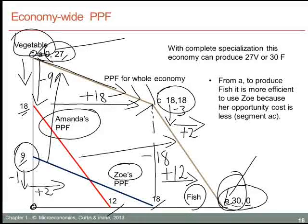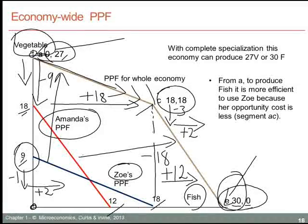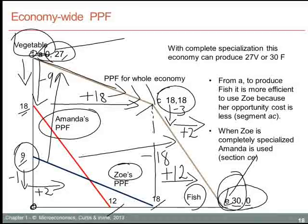If we are trying to be efficient in the allocation of labor and start from any point on the economy-wide production possibility frontier, we should use the individual who is most efficient at producing the desired good. That is why we get the kinked shape for the economy-wide production possibility frontier that we have here.